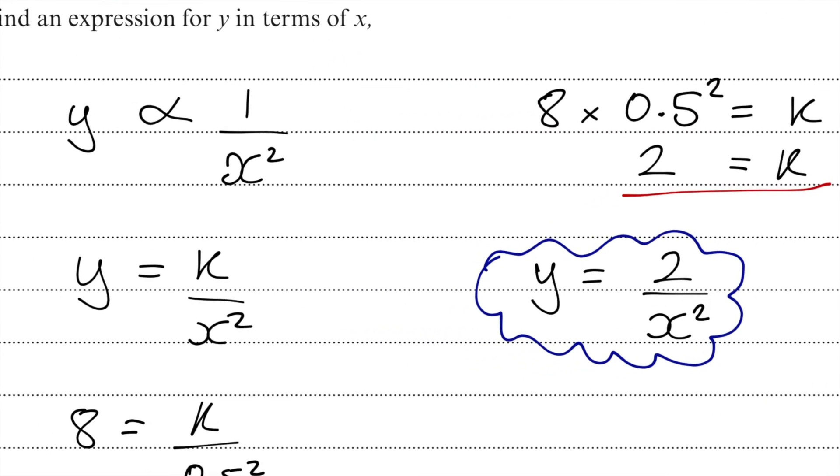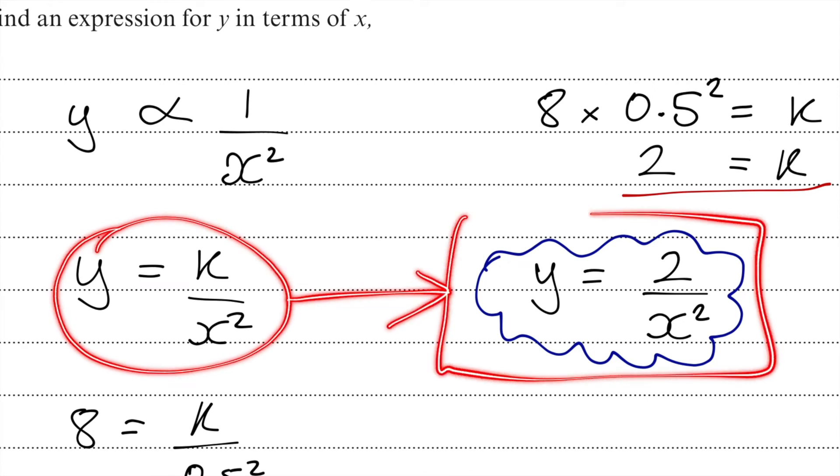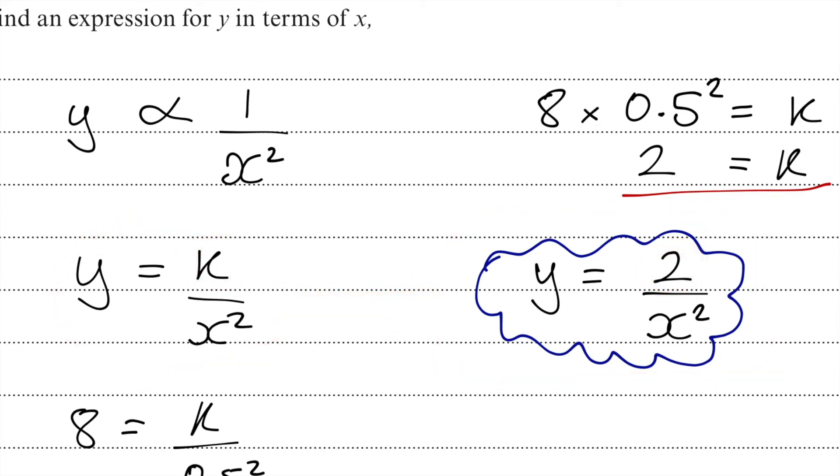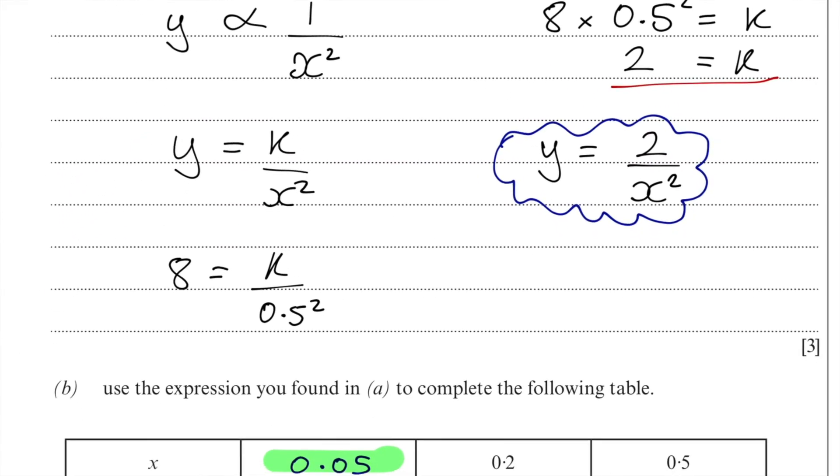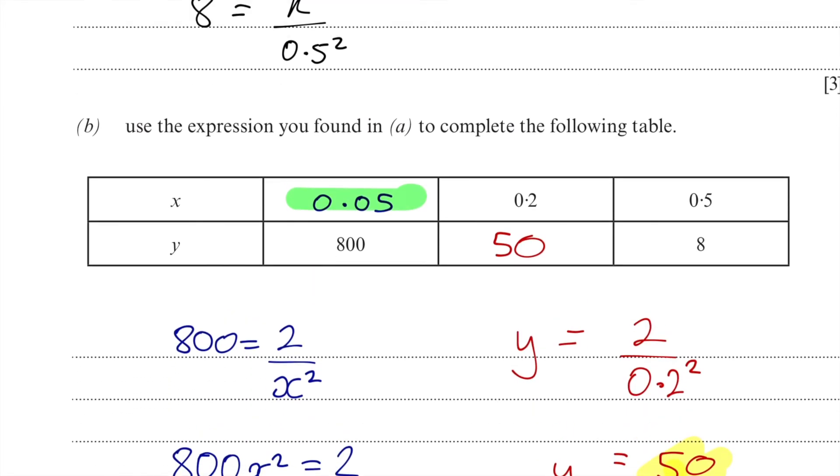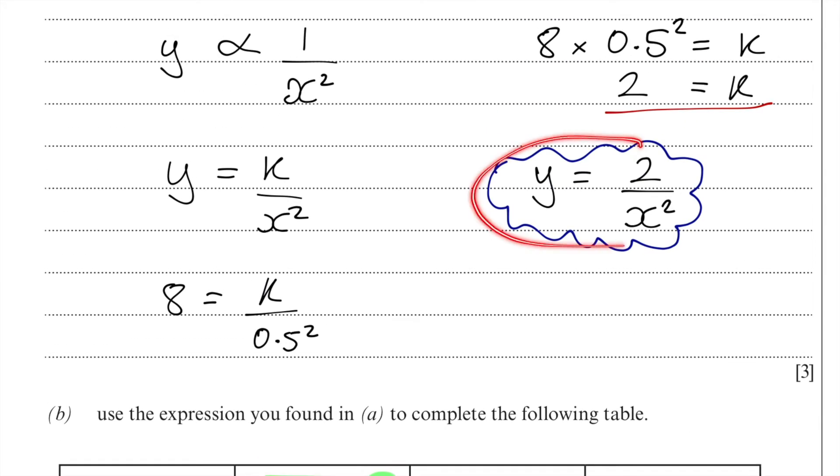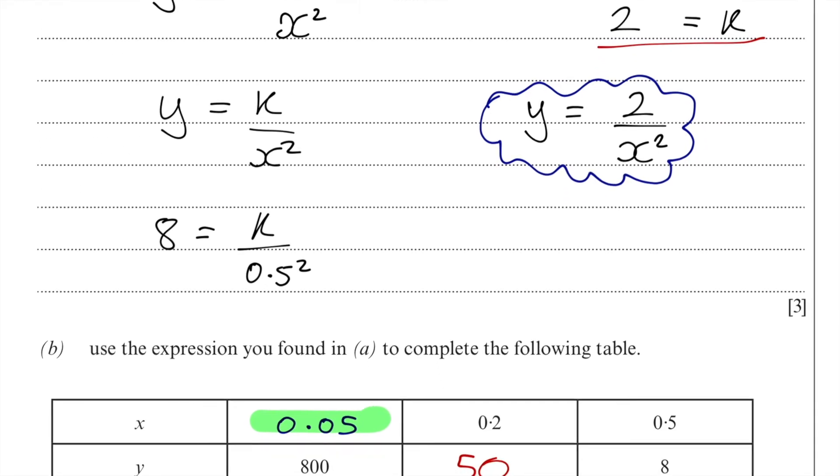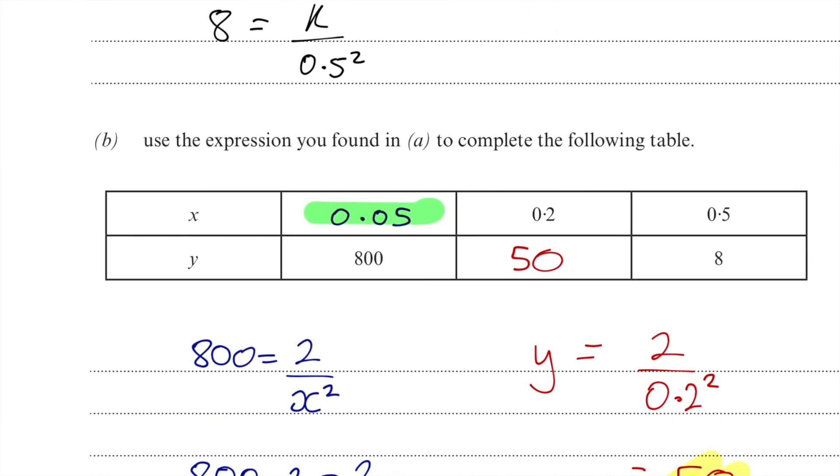What's really important is that you come back to this statement here where we said that y was equal to that, and we change the k for 2. That's all that's changed there. We're now going to use this statement here to help us answer the values in the table. Now we can already see them, but everything is coming off this formula that I've just worked out, that y is equal to 2 over x squared.